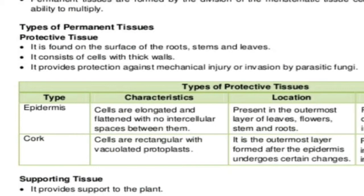Types of permanent tissue — let us start with the protective tissue. Protective tissue has been categorized into epidermis and cork. The main function: they are found on the surface of roots, stems, and leaves, where they have thick walls. They protect against mechanical injury and pathogenic invasions.